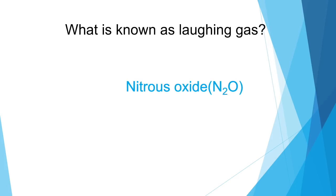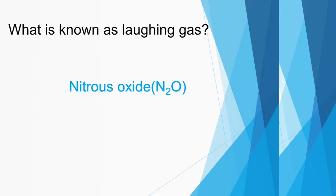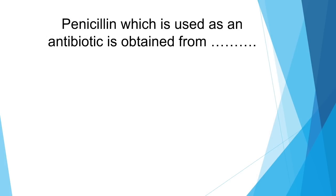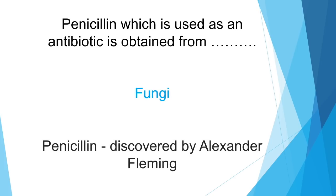Nitrous oxide is known as laughing gas. Penicillin, which is used as an antibiotic, is obtained from fungi. Penicillin is an antibiotic obtained from fungi, and it was discovered by Alexander Fleming.